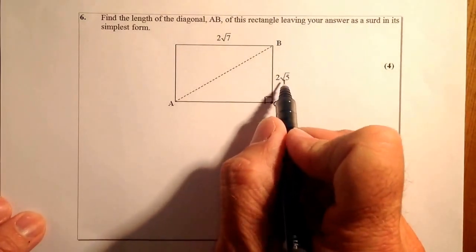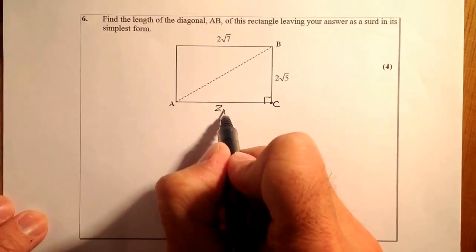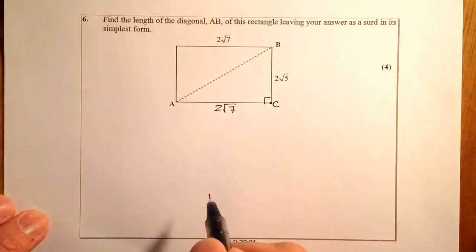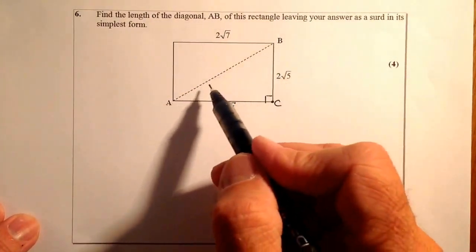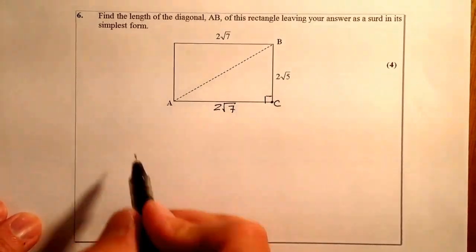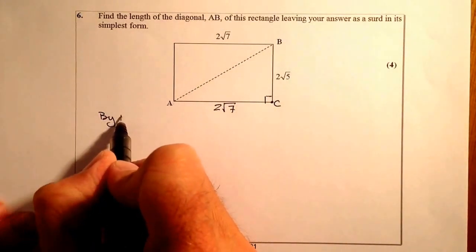So I know that's 2√5 there. This here is the same as the opposite side, which is 2√7. So what I'm then going to work out is the hypotenuse AB. I'm going to do that by Pythagoras Theorem.